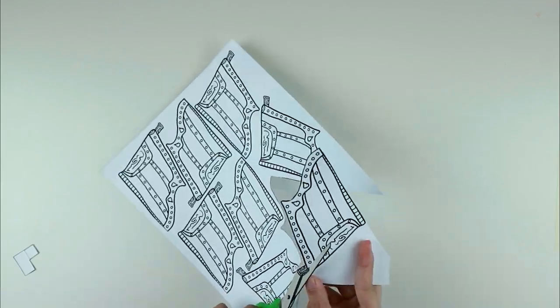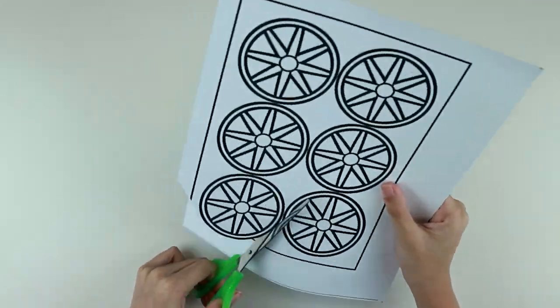Next, cut out the carriage of the chariot and the wheel of the chariot.